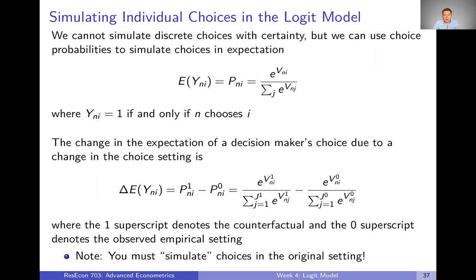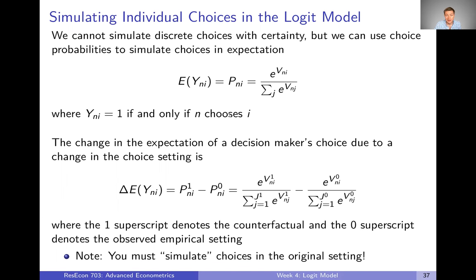Using the logit model, one of the things we care about most is how people make choices, so we want to simulate what choices would be under different settings or different data. We cannot simulate or predict discrete choices with certainty, but we can use choice probabilities to talk about the expectations of choices. If we think of y_ni as a binary variable equal to one if and only if n chooses i, then our expectation about y is the choice probability, and we have an expression to represent those choice probabilities.